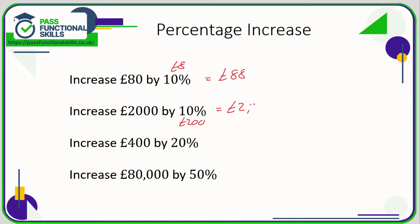What's 20% of 400? Well, 10% is 40 so 20% is going to be double that, which is 80. Add 80 on to get 480. What's 50% of 80,000? 50% is half, and half of 80,000 is 40,000, so we're adding 40,000 to 80,000.